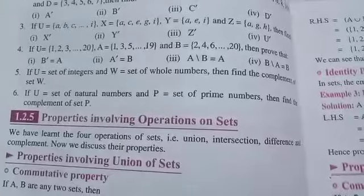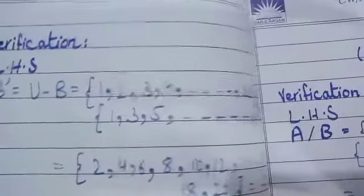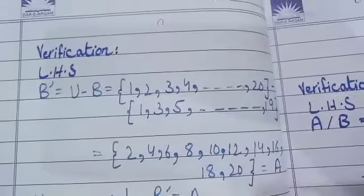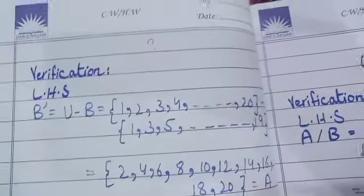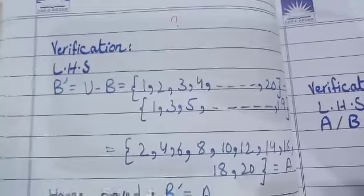In the first one, we have to find the complement set of B that must be equal to the A set.